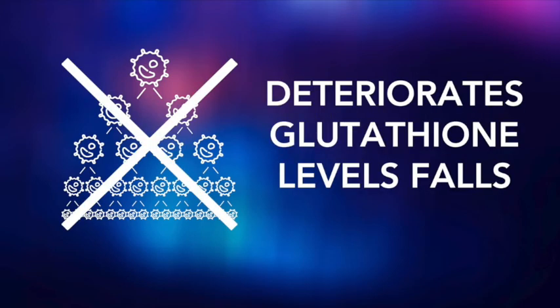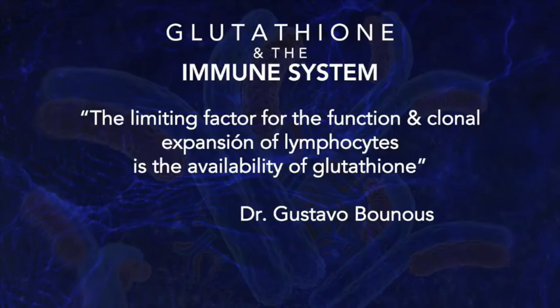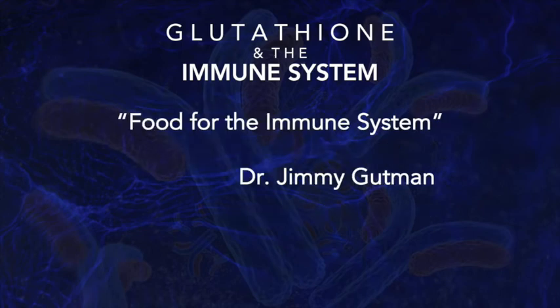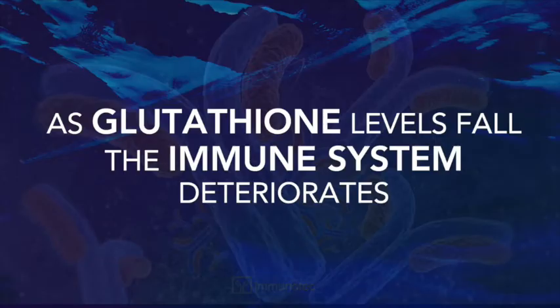But here's the thing: when glutathione levels begin to fall, this process starts to slow down. As Dr. Gustavo Bounos so eloquently wrote, the limiting factor for the function and clonal expansion of lymphocytes, or white blood cells, is their availability of glutathione. To put it simply, think of glutathione literally as food or fuel for your immune system. Bottom line: as glutathione levels fall, so does your immune function.